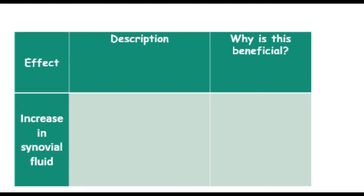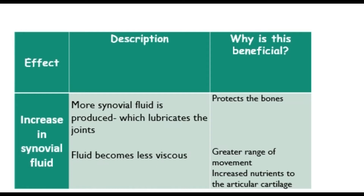Synovial fluid is a lubricant — a bit like oil in a car — it's the thing that's going to allow movement to be a lot easier and flow nice and smoothly, so there won't be any friction. The joint is lubricated and it protects the bone, which allows us to increase the demands of what we're able to do. This idea of more synovial fluid being produced means the joints can be lubricated. The fluid also becomes less viscous — viscous means how thick a fluid is, like a thick milkshake — so less thick means it's going to flow easier. The impact is that the bone is going to be protected.